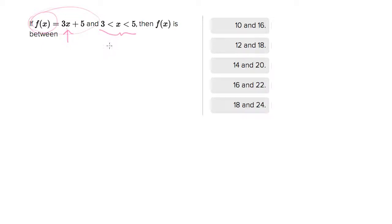One way to evaluate this, and a nice heuristic for solving these, is to take the lower bound and upper bound and plug those in. So let's do the lower bound, which would be 3 times 3 plus 5. That equals 9 plus 5 is 14.